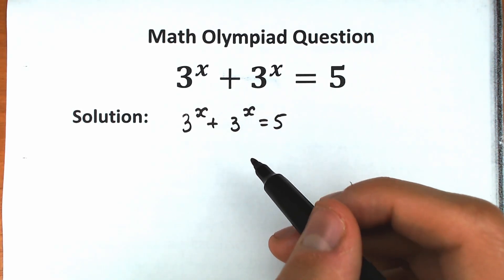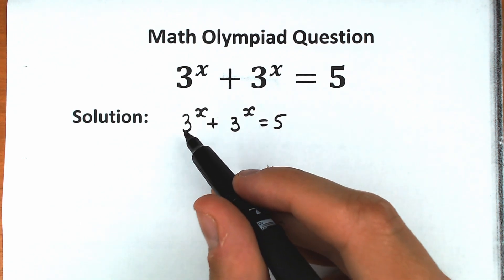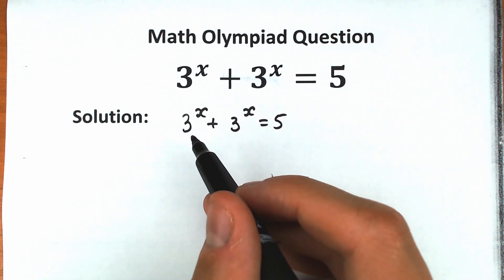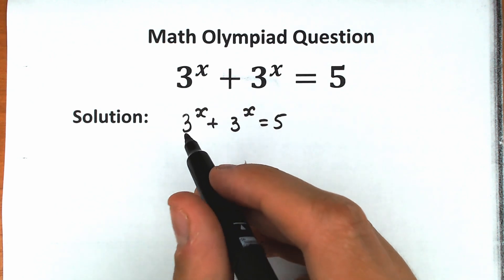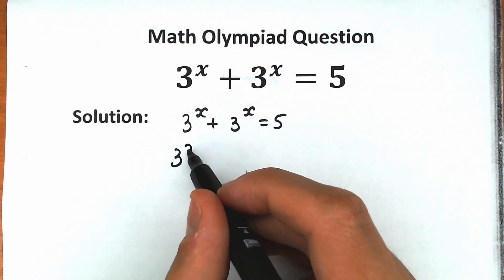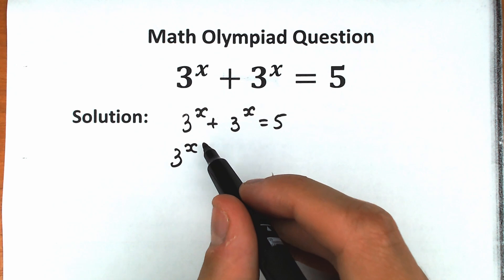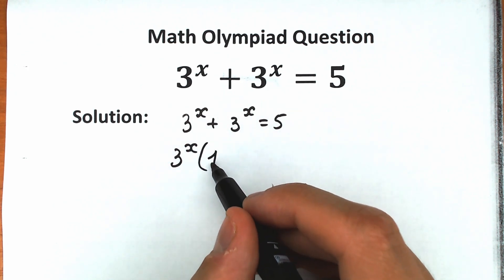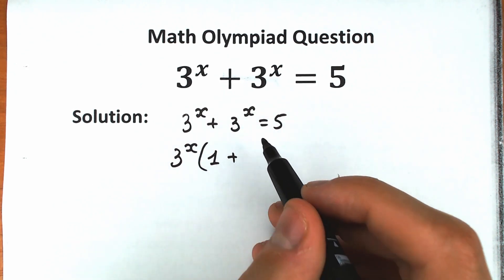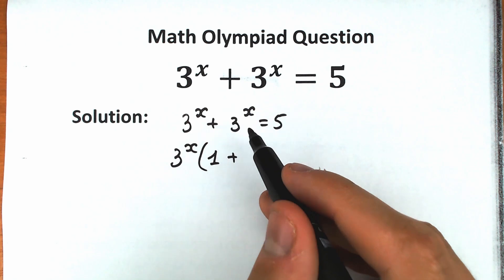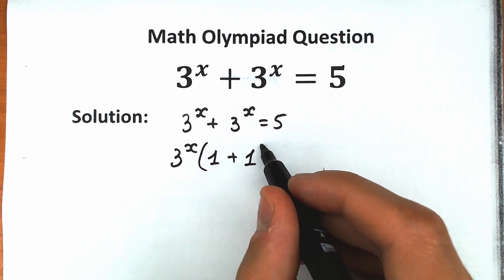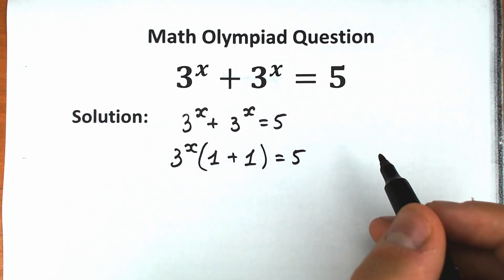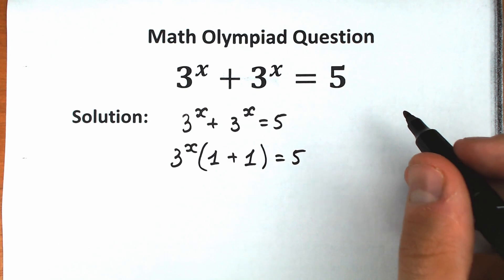So how can you find x from this question? First of all, I want to show you a really great trick which simplifies this question a lot. Let's factor 3 to the x outside these parentheses. So we have 3 to the power x, if we factor it, inside parentheses we have 1, and we have plus 3 to the x equal to, if we factor 3 to the x, we have 1 obviously, so equal to 5. If you don't understand this step, just take a look closer.